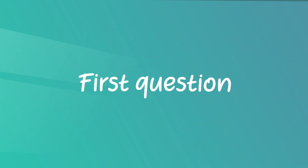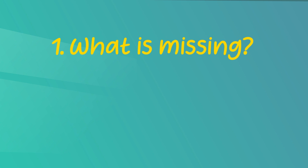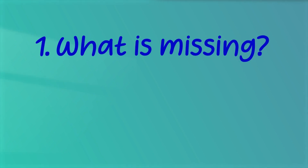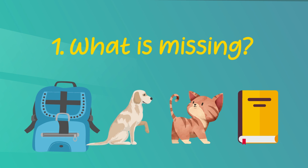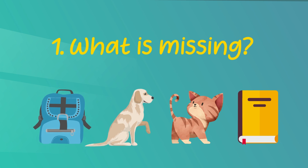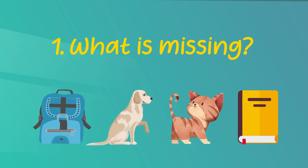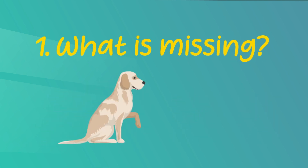Here is your first question: What is missing? You have to read the notice and find what is missing. You have four options: a school bag, a dog, a cat, and a book. According to the notice, you are correct — a dog is missing.